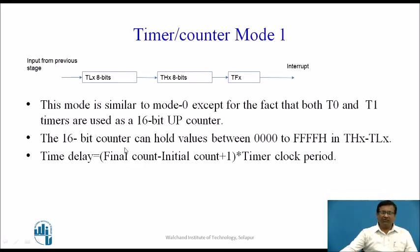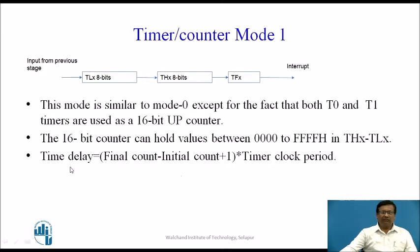The 16-bit counter can hold values between 0000H to FFFFH, so the maximum count in hexadecimal the 16-bit register can hold is FFFFH. This is loaded into TLX, where X stands for either timer 0 or timer 1 register. The formula for finding the initial count to be loaded into TLX and THX is: time delay = (final count − initial count + 1) × timer clock period.